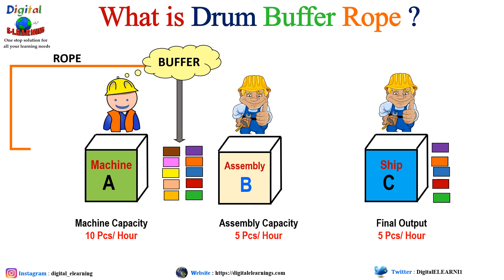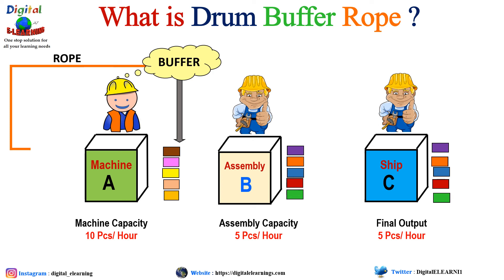This process continues — as soon as a decrease in buffer is detected, the rope mechanism signals to produce more parts for Assembly Line B. This is called a pull system, because we are informing the previous line to produce more parts as the buffer decreases, and we cannot let the assembly line stop at any point. Machine A can sit idle for some time, but Machine B cannot be idle for a single minute, as any delay at Assembly Line B will hamper shipment.